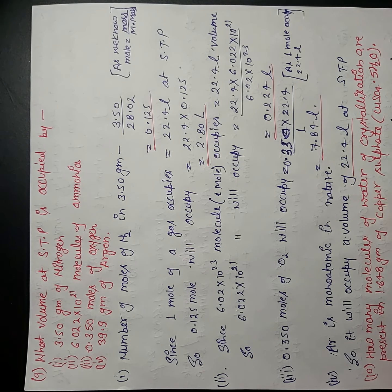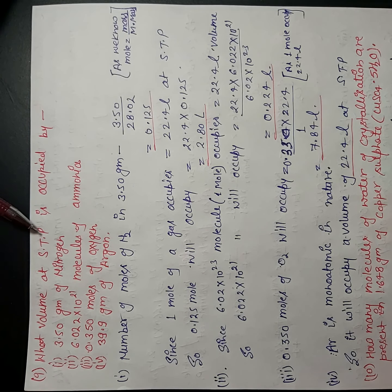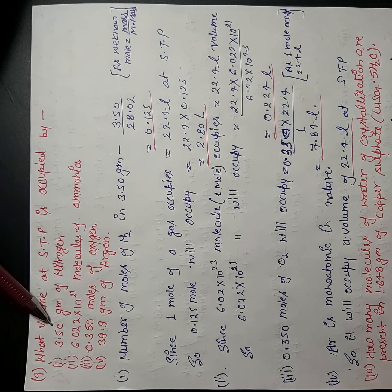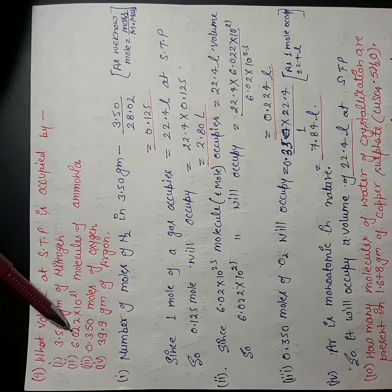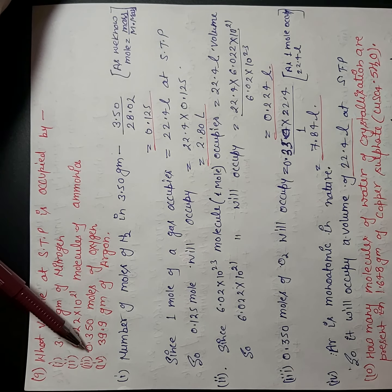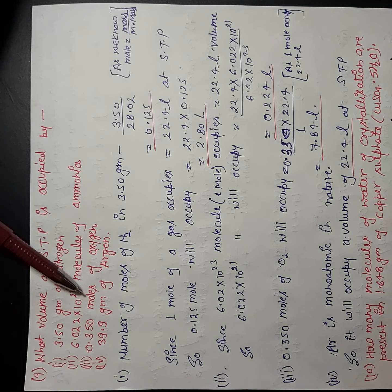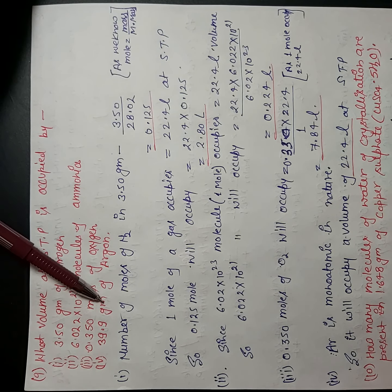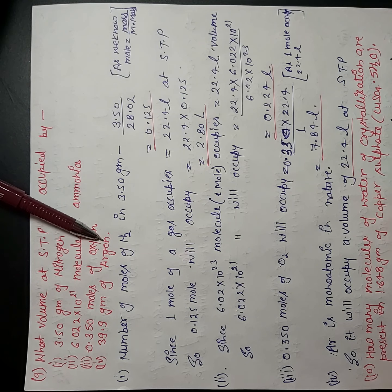Our next question is: what volume at STP is occupied by — number 1: 3.50 grams of nitrogen; 6.022 × 10²¹ molecules of ammonia; 0.350 moles of oxygen; and 39.9 grams of argon?